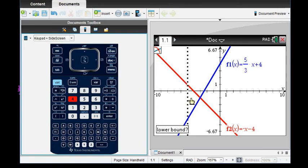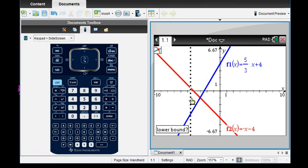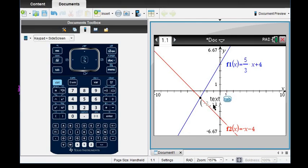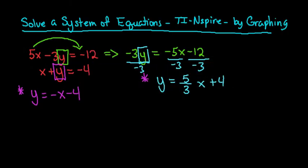For this one, it's going to ask us for a lower bound. Lower bound just means to the left, so it just means to the left of the intersection point. The upper bound means to the right of the intersection point. And then we can see that it intersects at the point negative 3, negative 1. So that would be our solution to this.